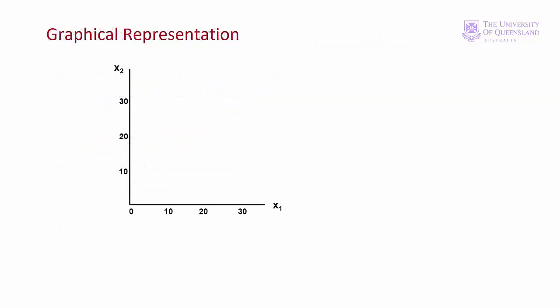You might have come across this type of problem represented graphically in microeconomics. We have a graph with the quantities of x1 and x2 on the axes. We can draw indifference curves that show the combinations of x1 and x2 that give the consumer the same utility. Because these combinations give the consumer the same utility, she's indifferent about the various combinations along this line. Consuming more of both goods has higher utility, so utility increases as the indifference curves move further from the origin.